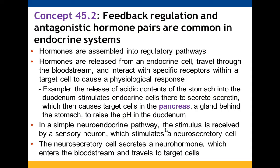There is lots of feedback regulation with hormones — antagonistic hormone pairs that work in concert to maintain homeostasis. Once released from an endocrine cell, hormones travel through the bloodstream alone or with a helper protein, then interact with receptors to cause a physiological response. For example, acidic stomach contents moving into the duodenum cause endocrine cells to secrete secretin, which causes the pancreas to increase pH to neutralize those acidic contents.